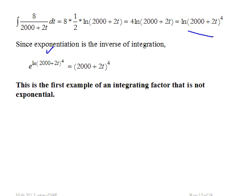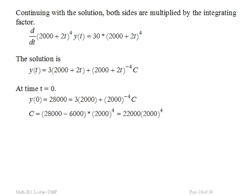All of this appears in the exponent. Well, e raised to the natural log, those are inverses of each other, and the answer is 2,000 plus 2t raised to the 4th. That is the integrating factor. So this is the first example of an integrating factor that was not exponential. Once we carried out the integration and looked at it in terms of being an exponent, the exponentiation went away.